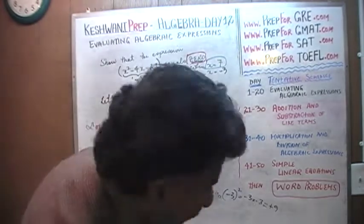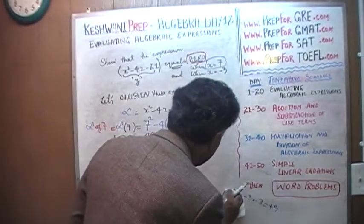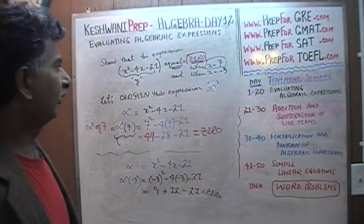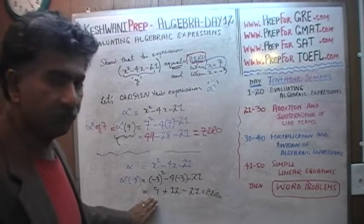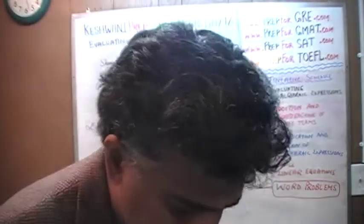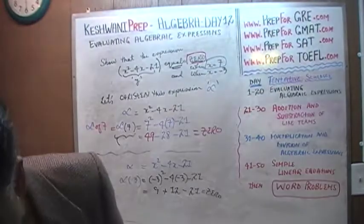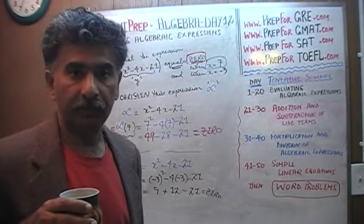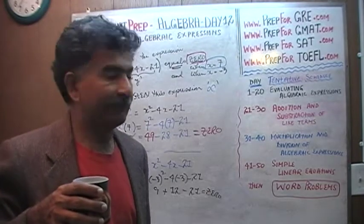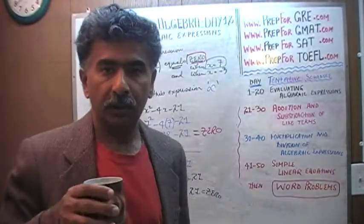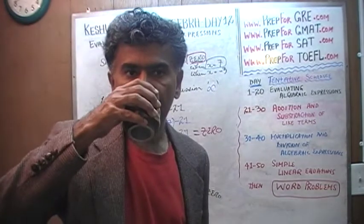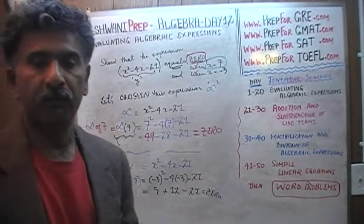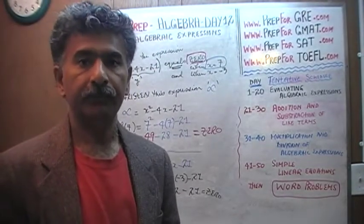Voilà! We have shown that this expression equals 0 when x equals 7 and when x equals negative 3. That's all there was — that's the end of the lesson for today. I will see you tomorrow on day number 13. In the meantime, if you wish to get hold of me, you can send me an email — go to any of the website addresses you see there, or go to kishwaniprep.com.